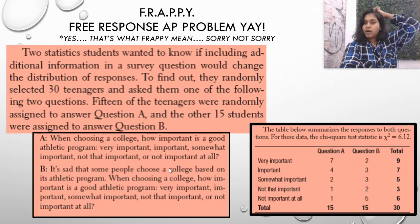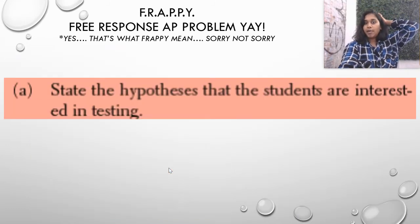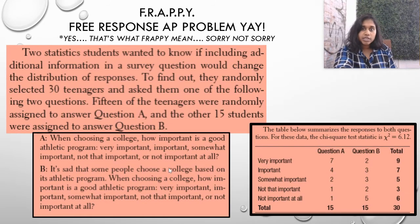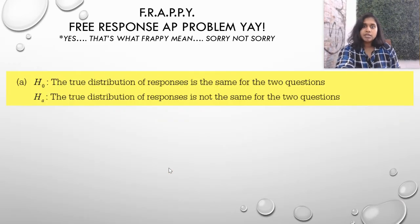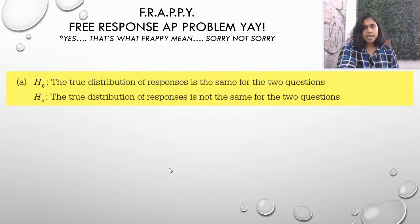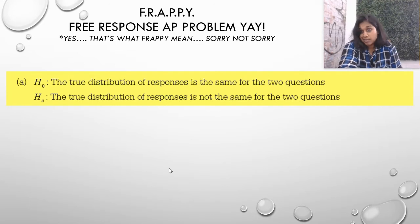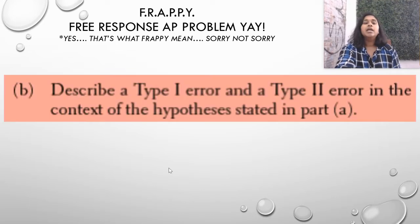So let's dive in with our answers. State the hypothesis that the students are interested in testing. That's easy enough. Well, they wanted to know if including additional information in a survey question would change the distribution of responses. So the null would be, of course, that the distribution of responses is the same for both questions. And the alternate would be it's not the same. We don't know if it's going to incline the students one way or another, but it's just going to be it's not the same, right? We don't know which one.